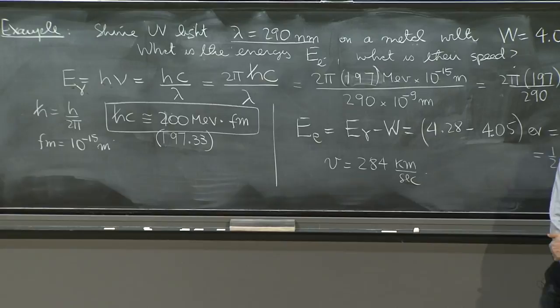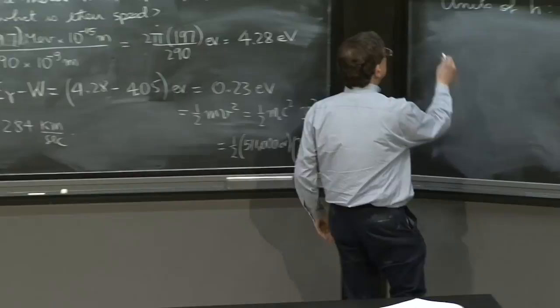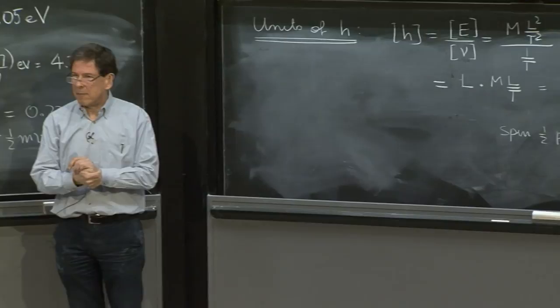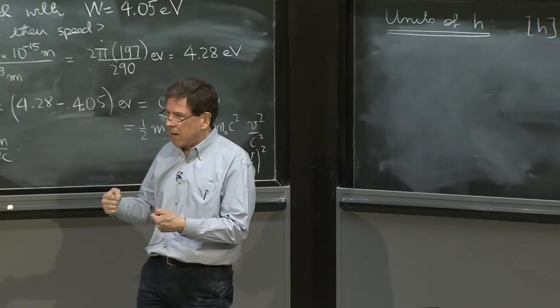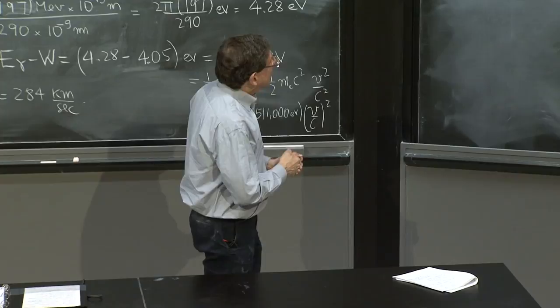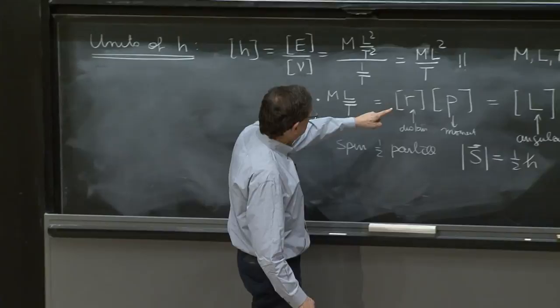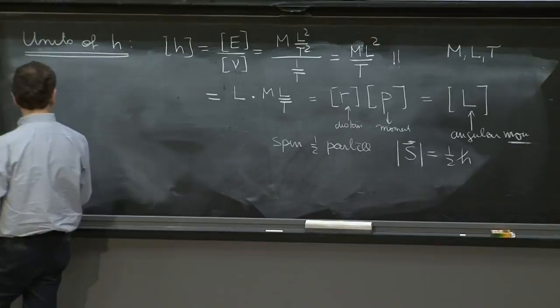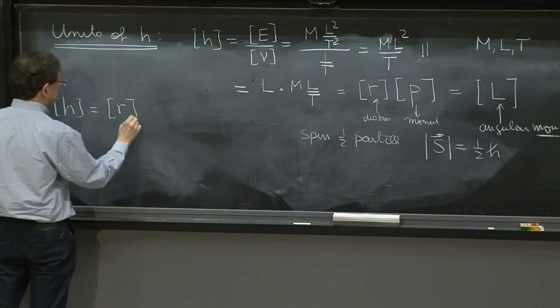So another thing that you could say is that this h allows you to construct all kinds of new quantities. And that's a nice thing to do. Whenever you have a new constant of nature that comes up, and we have the speed of light, Planck's constant, Newton's constant seem to be the three fundamental units of nature, you can do some things. And you can look at this quantity.